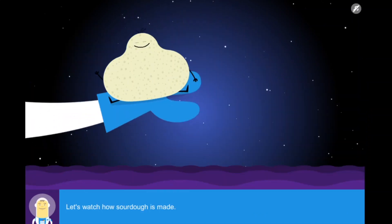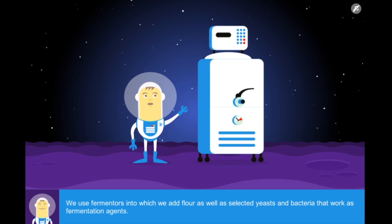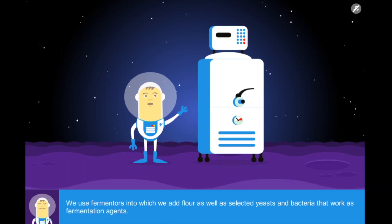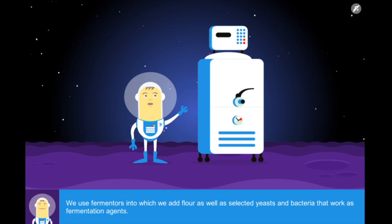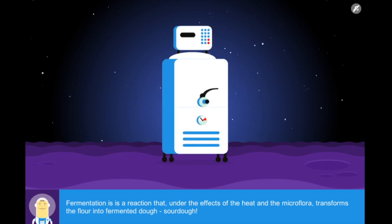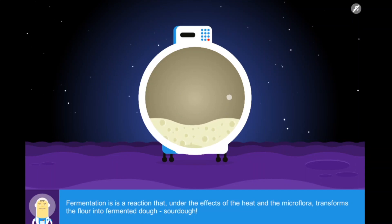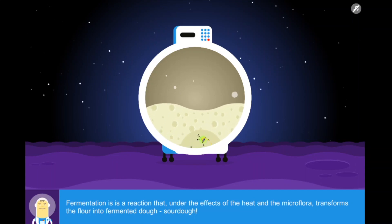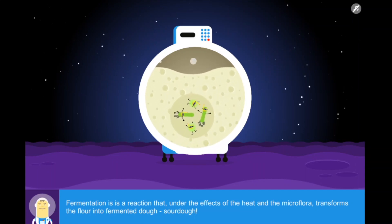Let's watch how sourdough is made. We use fermenters into which we add flour as well as selected yeasts and bacteria that work as fermentation agents. Fermentation is a reaction that, under the effects of heat and the microflora, transforms the flour into fermented dough.